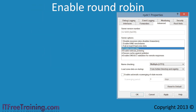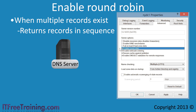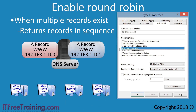The next option is enable round robin. This option is enabled by default but only comes into effect when there are multiple records that exist with the same name. When this occurs, the records will be returned in sequence, which provides very basic load balancing. Consider a DNS server which has 2 A records for www, each with a different IP address. Now consider 4 computers on the network which ask to resolve the record www one after the other. The first computer will obtain the first DNS record on the server.